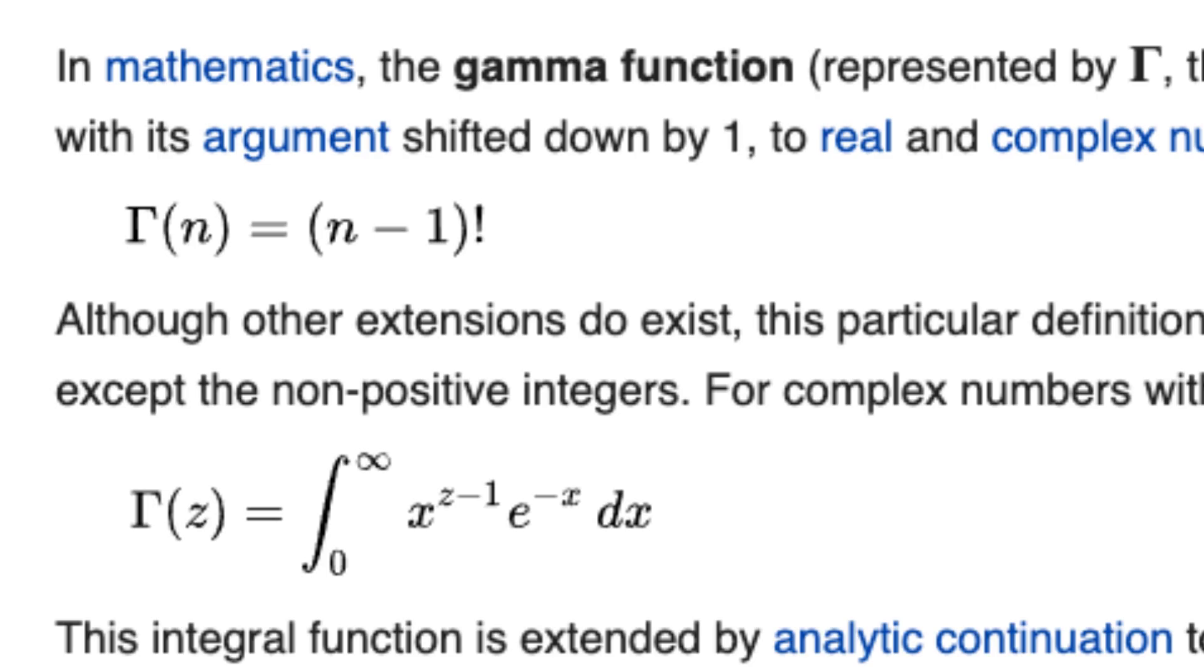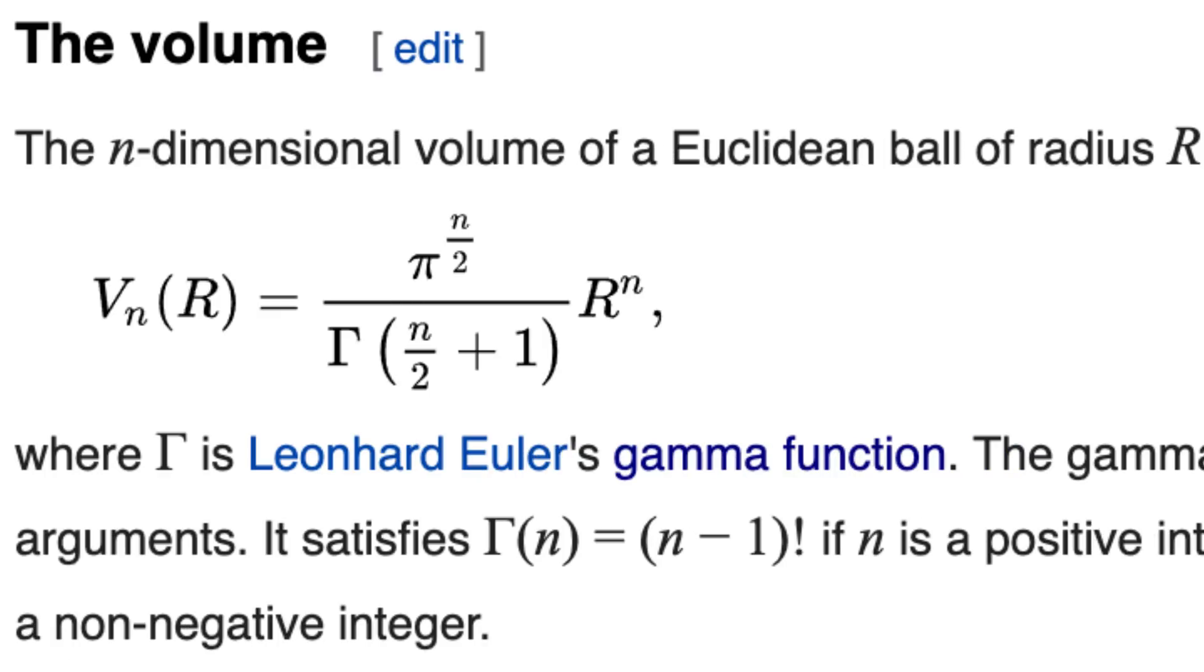The reason we need to start with the gamma function is because it shows up in the equation for the volume of an n-dimensional sphere. If you want a proof of where this comes from, I'll put a link below. But for this video, we'll at least check that it holds for dimensions we're familiar with.